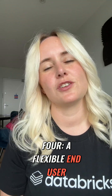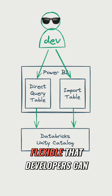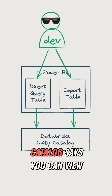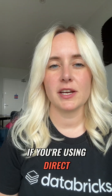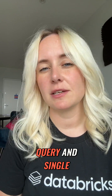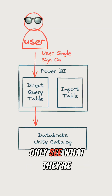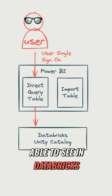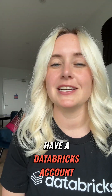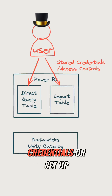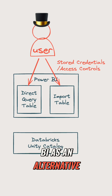Four, a flexible end-user security model. Now it's not so flexible that developers can get around what Unity Catalog says you can view, but you have a choice in what your users see. If you're using direct query and a single sign-on for authentication, you could make users sign in, and they'll only see what they're able to see in Databricks. Now understandably, Mr. Big Boss might not have a Databricks account, so you can store credentials or set up access controls in Power BI as an alternative.